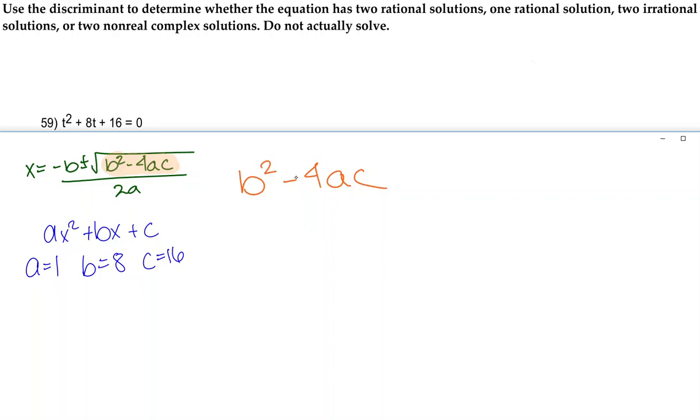So let's just go ahead and plug that into our discriminant, and then we'll talk about what the answer means. We're going to have 8 squared minus 4 times 1 times 16. 8 squared is 64, and 4 times 1 times 16 is 64. 64 minus 64 is 0.